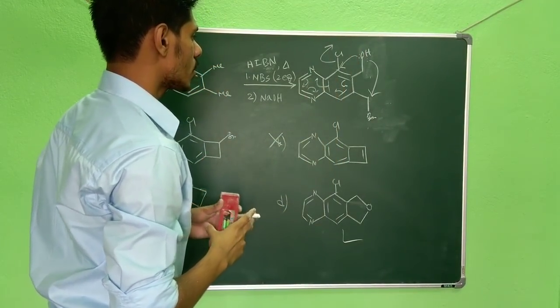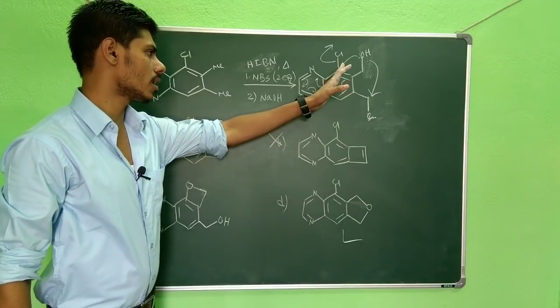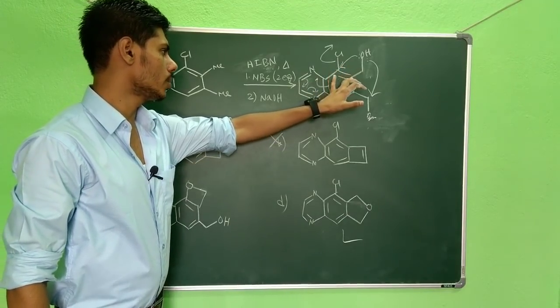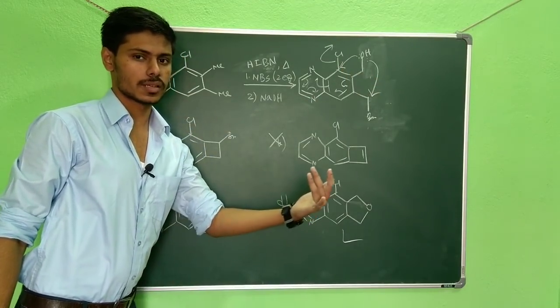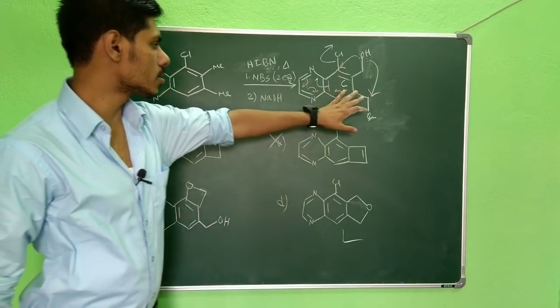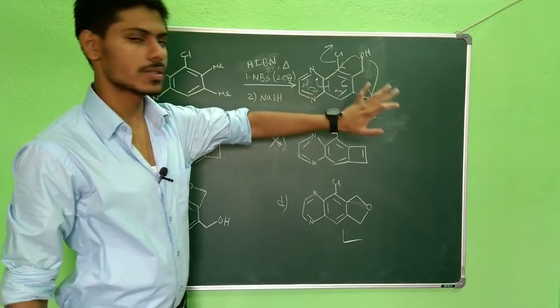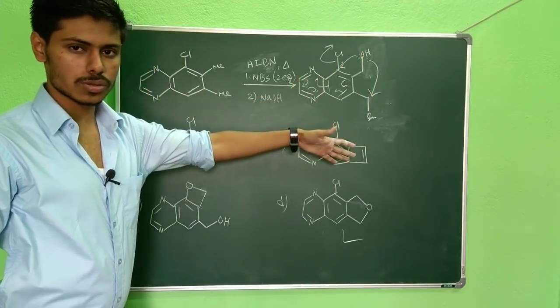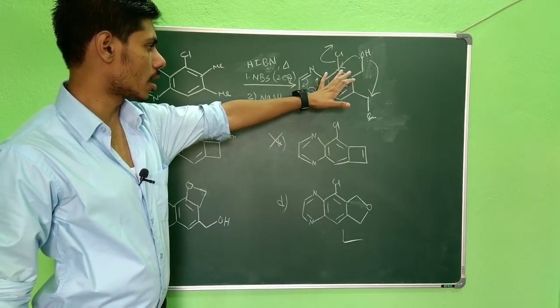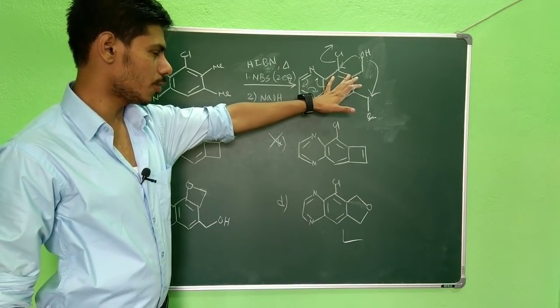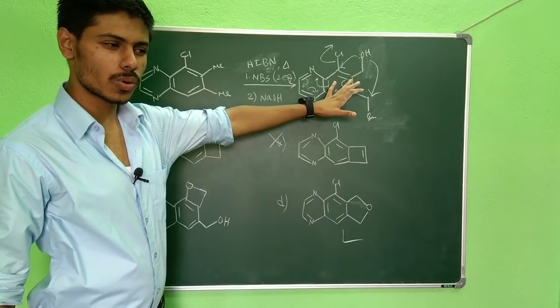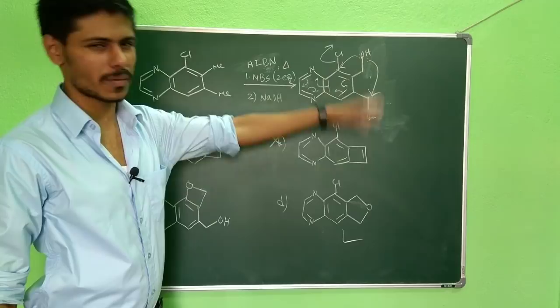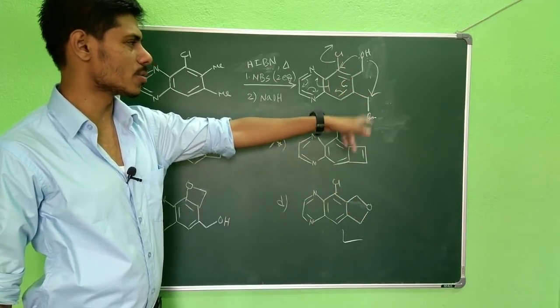But here the problem is, you can see this type of reaction is not favorable because it is one, two, three, four—this is a four-member transition state. And here it is one, two, three, four, five—so it is a five-member transition state. And if you consider Baldwin's rule also, this represents four-endo-trig, which is not favorable at all. Whereas this is five-exo-tet, which is much more favorable.